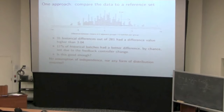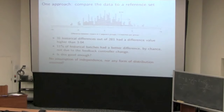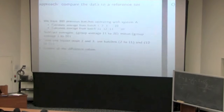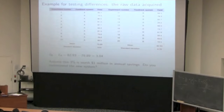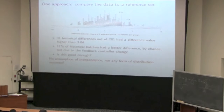Remember, our difference with the new control system was 3%. How many batches in the past gave us a difference of 3% or greater, purely by chance — purely based on the natural variation in the system? We can quickly find that 31 of those 281 differences lie to the right of 3%. So 31 batches, by chance, had a difference in yield better than what the new feedback control system gave us. Our new system from Aspen gave us a 3% improvement.